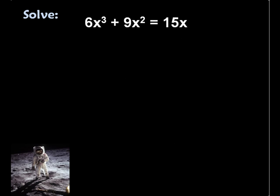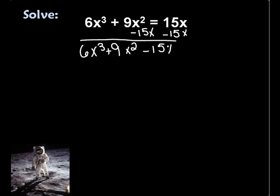Let's look at this one. Well, first of all, it's not equal to 0, right? So I have to make it equal to 0. So I'm going to subtract 15x from both sides. I end up with 6x³ + 9x² - 15x = 0. Now my next step is to look and see, do I have any common factors? And I do, actually—3x will come out of each of those. So I'm going to take out a 3x, divide out a 3x, I end up with 2x² + 3x - 5.